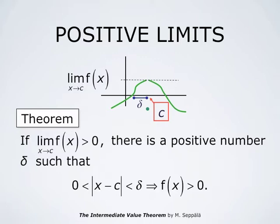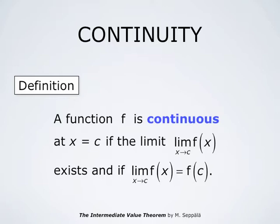Let us start by recalling earlier considerations. We have seen that if the limit of a function f at some point C is a positive number, then there is a positive number delta such that whenever 0 is less than the absolute value of x minus C less than delta, then f(x) is positive. Observe that this statement says nothing about the value of f at the point C — that value may very well be negative even if the limit of the function at C is positive. We define continuity by saying that a function f is continuous at a point C if the limit of f at that point exists and agrees with the value of the function.